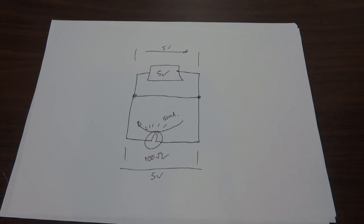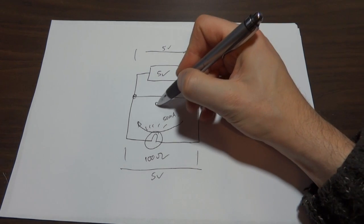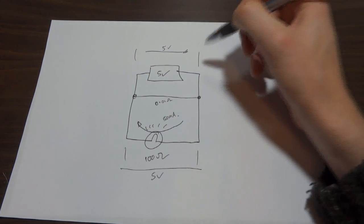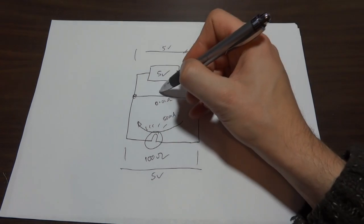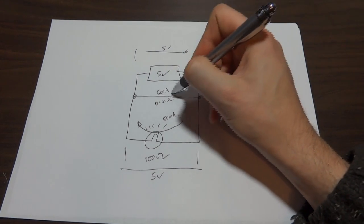So obviously if we short out a bulb with a battery, then it doesn't work. But typically the reason for that is that we're drawing such a large current through here, perhaps the resistance is 0.01 ohms, which means five volts. Ohm's law says we're drawing 500 amps through this part of the circuit.